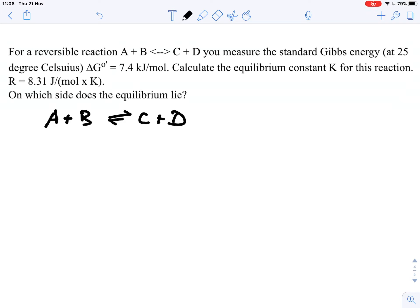And we know that we are looking at standard conditions, delta G naught. And in this case we have got a prime here which indicates that we are looking at a biological system, but that is not really of importance here. So we know that delta G equals 7.4 kJ per mole.